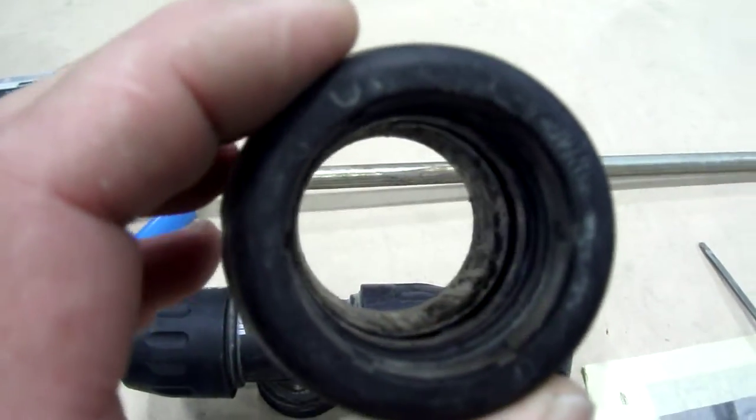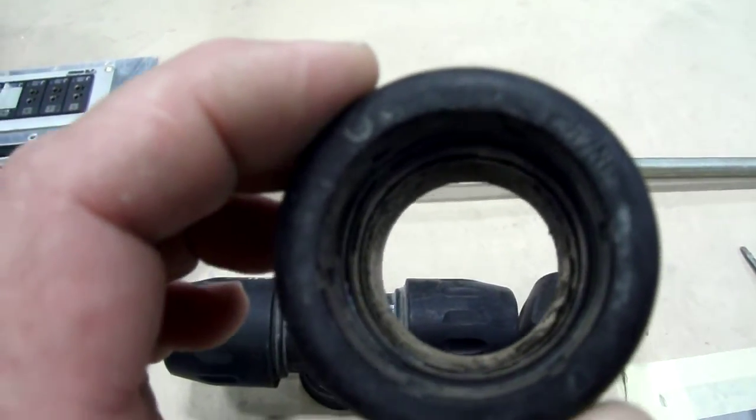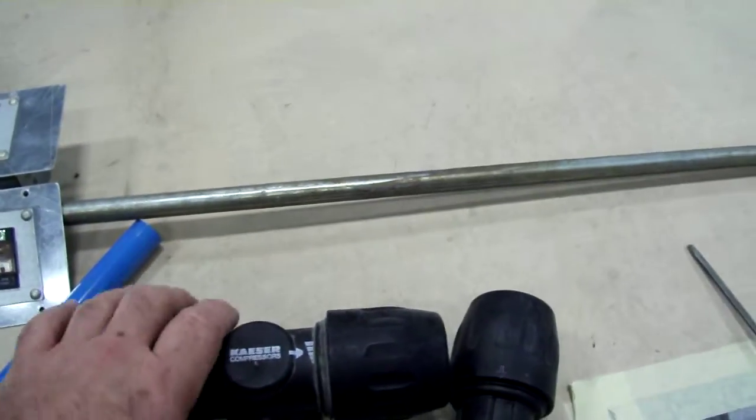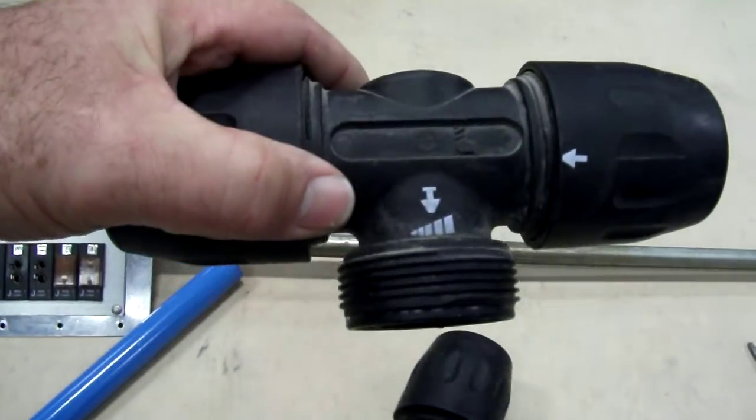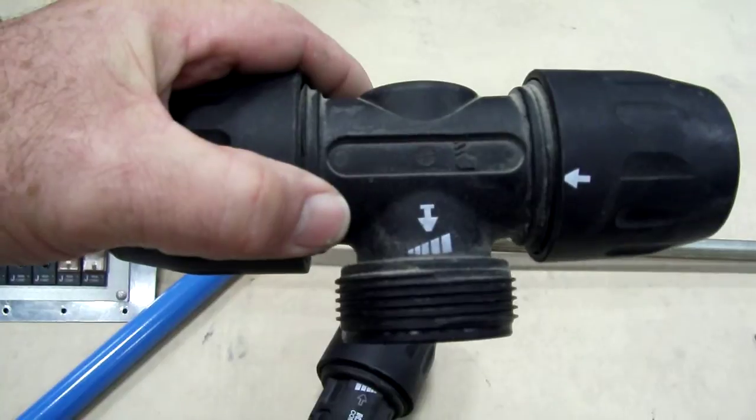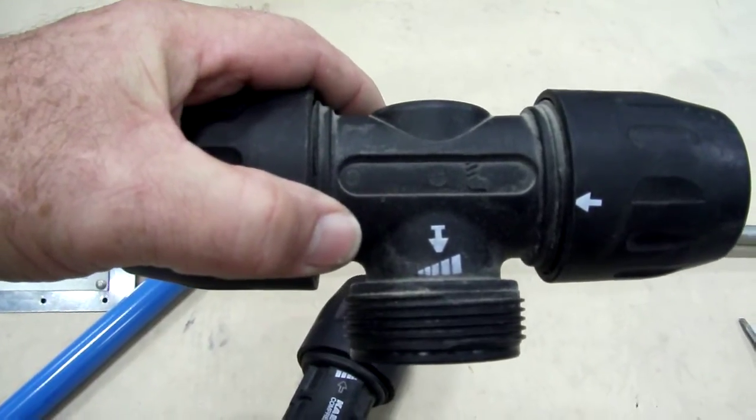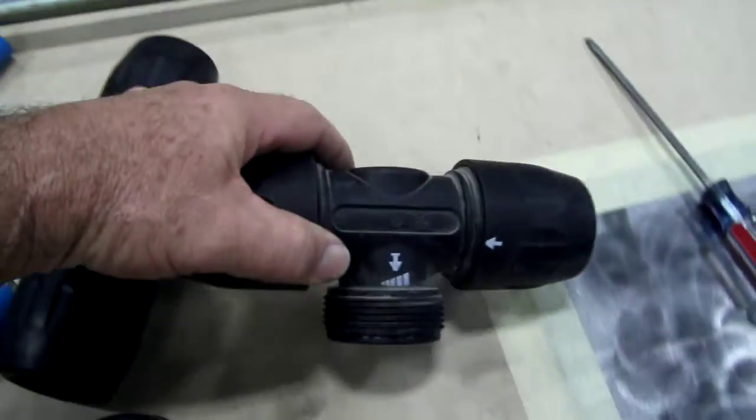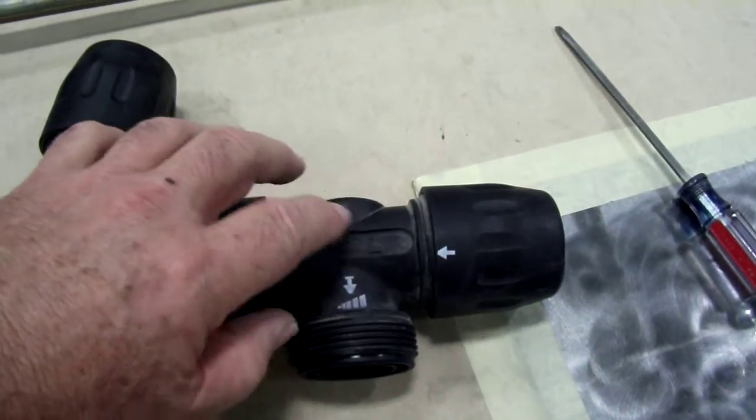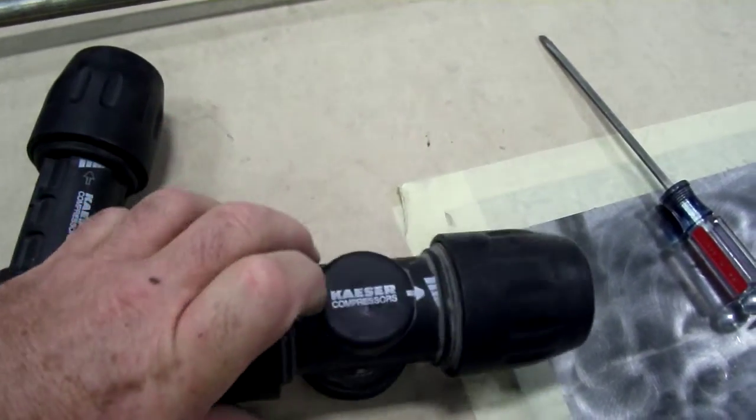You just press this on and it locks when you tighten the nut onto whatever fitting you're using. Notice it has arrows, and the nut has an arrow that corresponds.